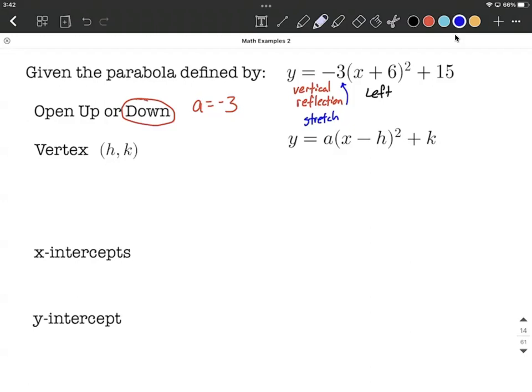And then finally, at the end, we have that plus 15. Well, when you add or subtract a number to the entire function, it's going to be a vertical movement. Now, in this case, this is going to be a vertical movement in the upward direction.